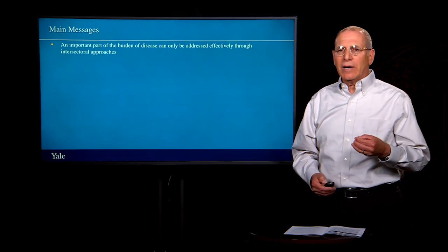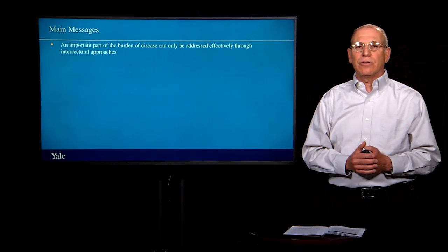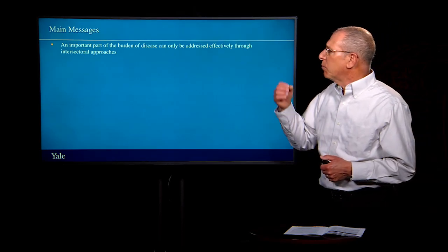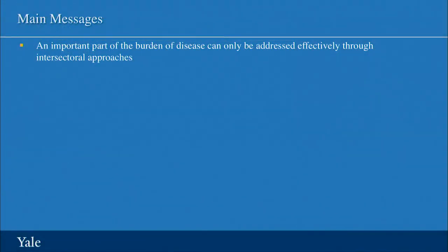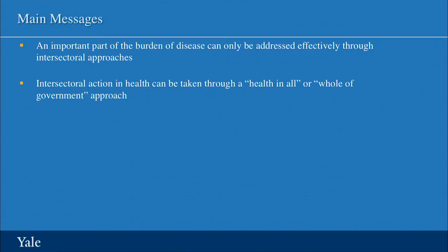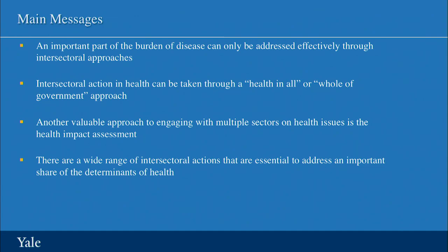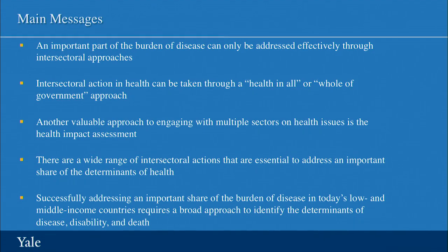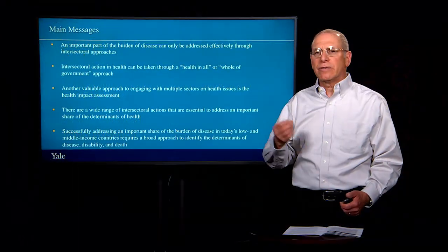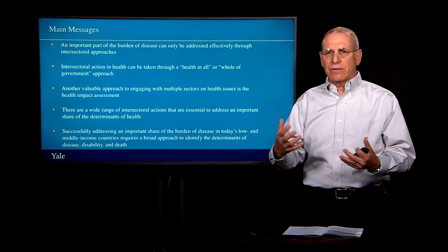In conclusion, the main messages of this session on intersectoral approaches to enabling better health are: first, an important part of the burden of disease can only be addressed through intersectoral approaches; second, intersectoral action might be taken through a health-in-all or whole-of-government approach; third, health impact assessments are a valuable tool for engaging multiple sectors on health issues; and finally, successfully addressing an important share of the burden of disease in low- and middle-income countries requires a broad approach to identify the determinants of disease, disability, and death, and then act on them across agencies. Thank you very much.